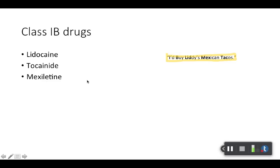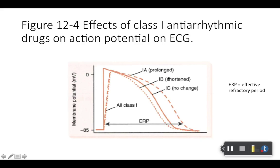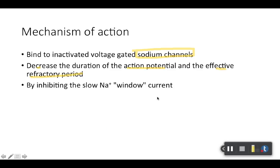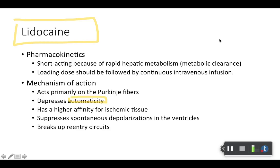Now we have class 1B. The mnemonic is 'I buy Liddy's Mexican tacos' to help remember these. Here's the list of class 1B drugs. Mechanism of action — probably no surprise: sodium channel blocker. This is 1B, so you don't have to worry about it affecting potassium or muscarinic receptors — a pretty straightforward mechanism of action.